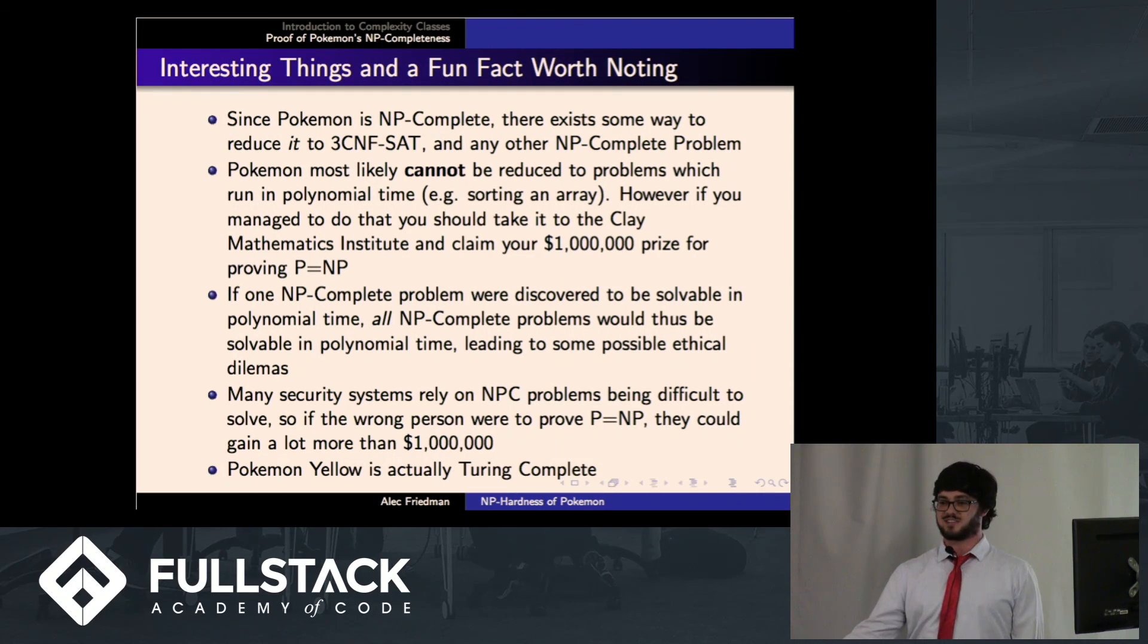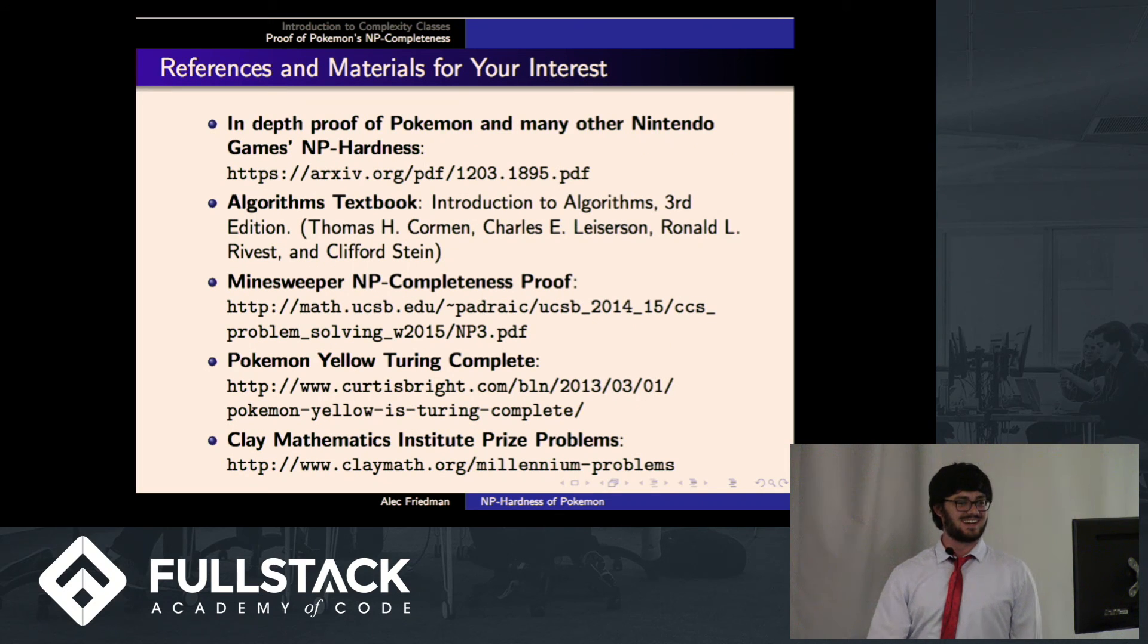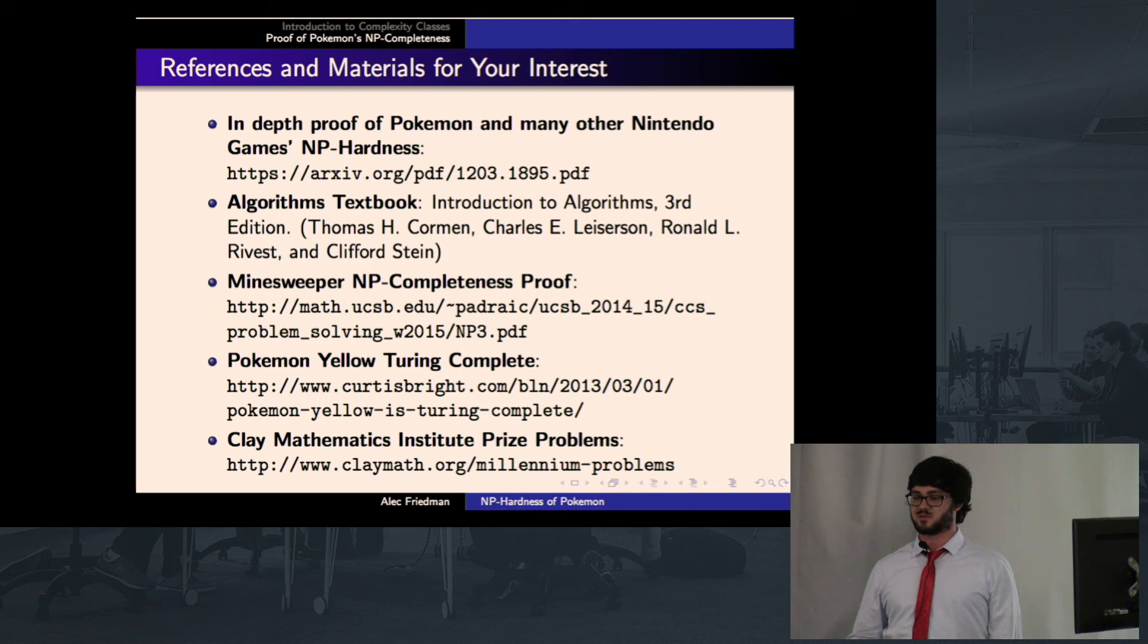And another interesting fun fact, Pokemon Yellow is actually Turing-complete. You can actually, it's, yeah, I have a link to it. So, yeah, so on here there's a link to the more in-depth proof of Pokemon's NP-completeness, and also included on there is the proof of Donkey Kong, Mario, and Zelda's NP-completeness, and there's a Minesweeper NP-completeness proof if anyone's interested, Pokemon Yellow being Turing-complete, and the Clay Mathematics Institute prize problems if anyone's feeling ambitious. Thank you, guys.